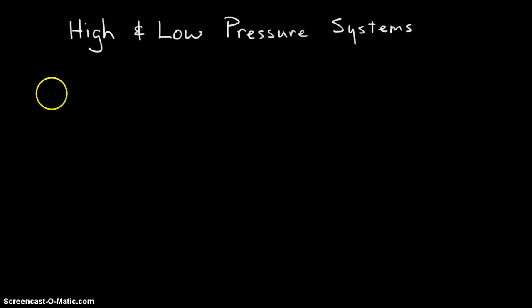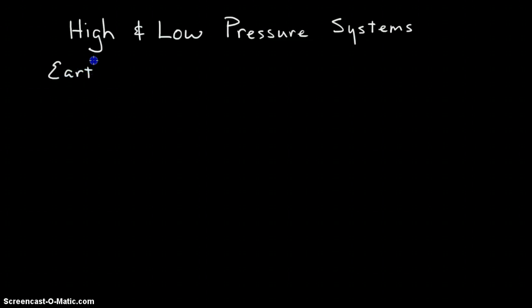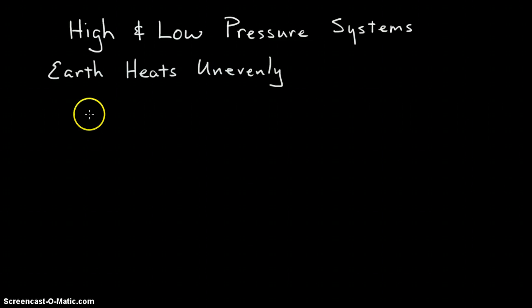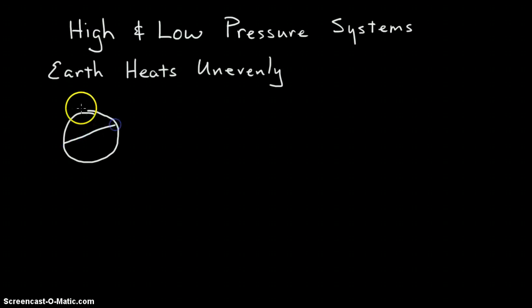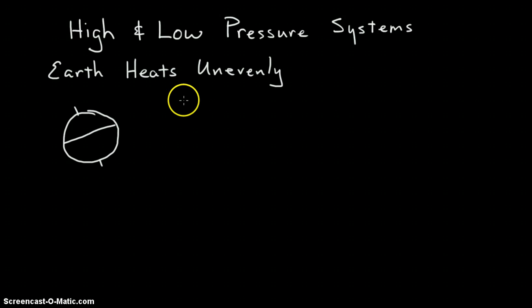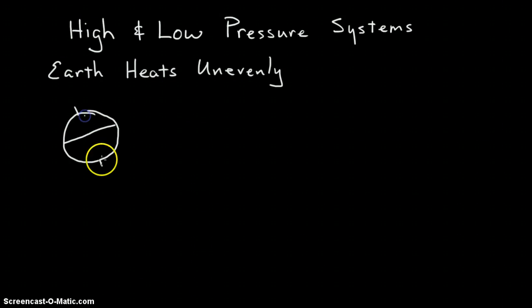One of the things we have to first consider when discussing high and low pressure systems in our weather unit is that our Earth heats unevenly. One reason for that is that Earth is, of course, a sphere. Another reason is Earth is on a tilt. These two reasons create different areas of the Earth becoming hotter or colder at different times of the year. Being near the North Pole or South Pole means you're always going to be colder than if you're near the equator.